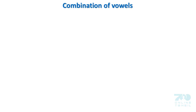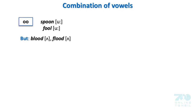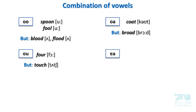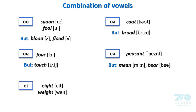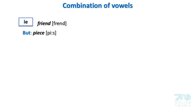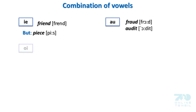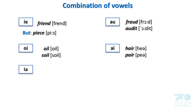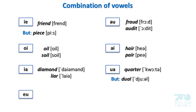Combination of vowels — check these from words. OO sounds as in: spoon, fool, butt, blood, float. OA sounds as in: broad. OU sounds as in: touch. EA sounds as in: pleasant, mean, bear. EI sounds as in: wait. EE sounds as in: scene, teen. IE sounds as in: friend, peace. AU sounds as in: fraud, audit. OI sounds as in: oil, soil. AI sounds as in: hair, pear. IA sounds as in: diamond, liar. UA sounds as in: quarter. EU sounds as in: feudal. UI sounds as in: cruise, fluid.